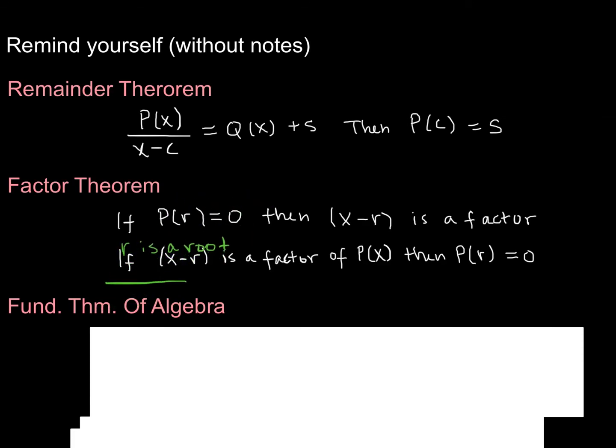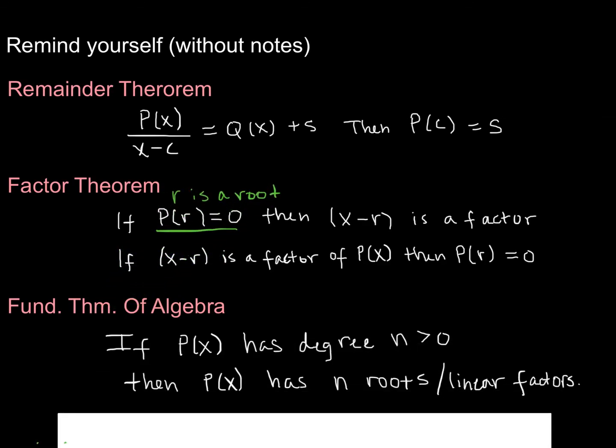Alright. Last but certainly not least is the fundamental theorem of algebra. So the fundamental theorem of algebra says this. If P(x) has a degree of n greater than 0, so some polynomial, then P(x) has n roots. And that means it also has n linear factors. So you have a degree 8 polynomial. It has 8 roots and 8 linear factors.